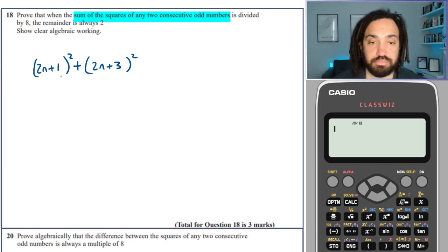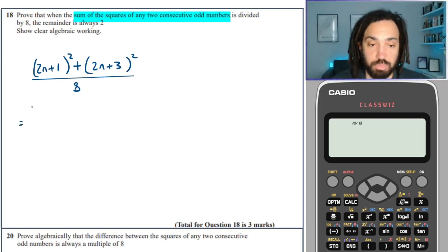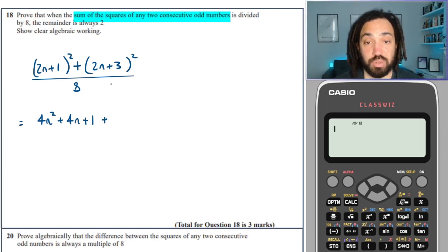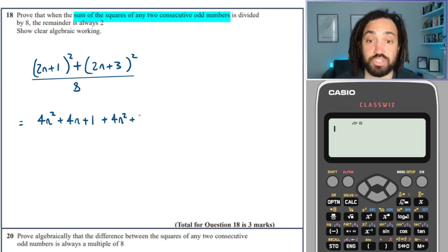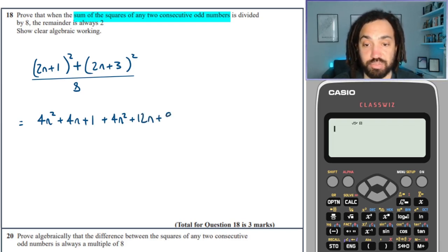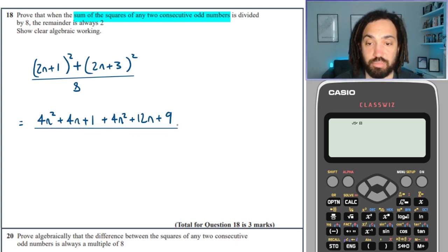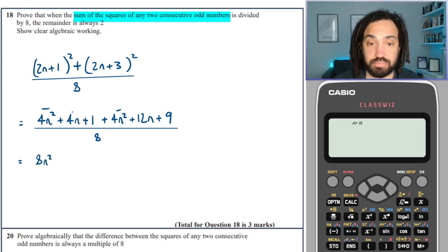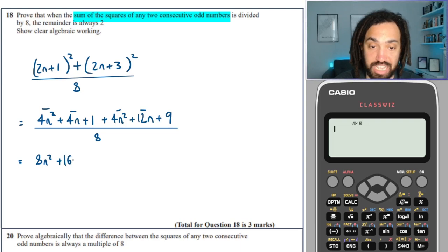So we need to divide that all by 8. Multiplying out: (2n plus 1) squared gives 4n squared plus 4n plus 1. (2n plus 3) squared gives 4n squared plus 12n plus 9. Collecting: 4n squared plus 4n squared is 8n squared; 4n plus 12n is 16n; 1 plus 9 is 10. So we have 8n squared plus 16n plus 10, all divided by 8.